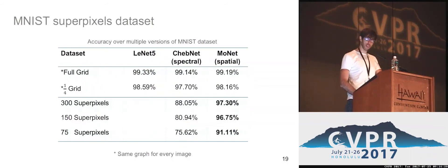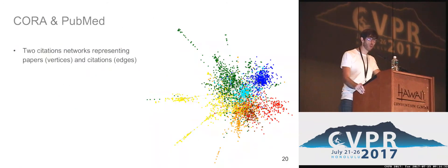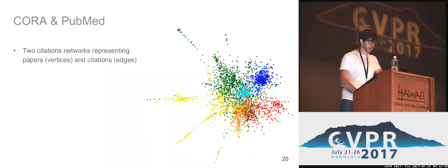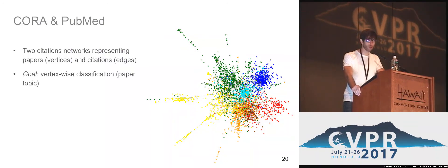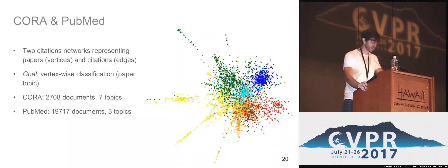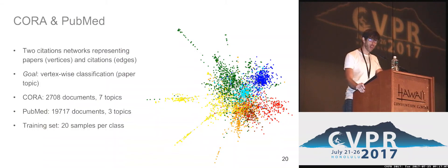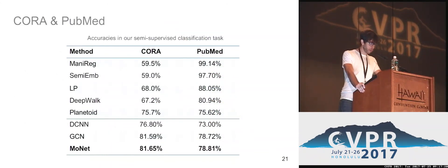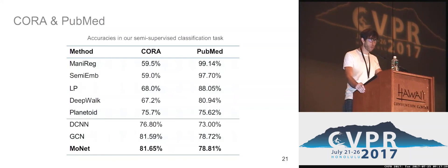The second problem we addressed is a semi-supervised vertex classification task. We took the famous Cora and PubMed datasets — two citation networks where vertices are papers and edges are citations — and classified each paper with respect to the topic it belongs to. Cora contains 2,700 documents with seven different topics, and PubMed 19k documents with three topics. Since this is a semi-supervised task, we used just 20 samples per class as the labeled set, with all others unlabeled. Using the degree of nodes to define the relationship between vertices, our approach achieves 81.65% accuracy on Cora and 78.81% on PubMed, outperforming all other competitors.